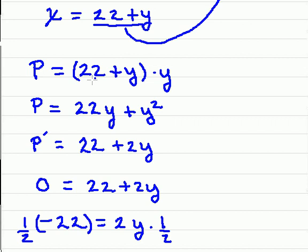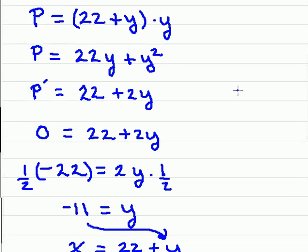Now I want to distribute this y across and then take the derivative. The derivative of 22y is 22 and the derivative of y squared is 2y. Taking the derivative now and setting it equal to zero and solving for y.